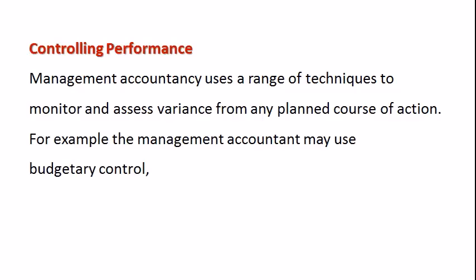Management accountants may use budgetary control to monitor the overall trend of the business and ensure it's moving where management intended within the set time period. They may set up budgets for various departments, processes, or activities and then monitor them. They could also use standard costing — working out the normal costs of producing a particular product, then monitoring cost increases, determining what percentage increase is occurring, and assessing the likely impacts on the final price or on contracts the business may have agreed with buyers.